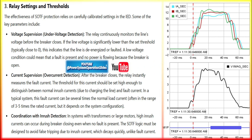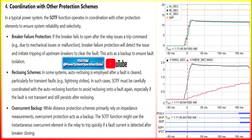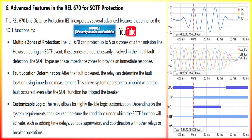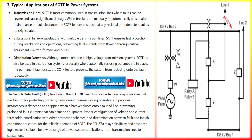The SOTF function typically activates under these conditions. When the breaker closes onto a fault, there will be a sudden increase in fault current. Before the breaker closes, the voltage across the line is usually low — zero or near zero if there is a fault. The relay monitors the line voltage and senses that there is no healthy voltage present before closing the breaker. As soon as the breaker closes, if the current rises sharply — indicative of a fault — the SOTF function is triggered. The REL670 Line Distance Protection IED is designed with advanced features for fault detection, including SOTF.